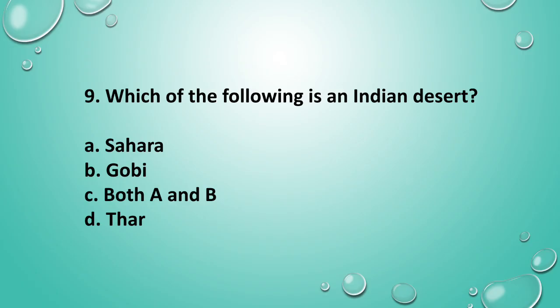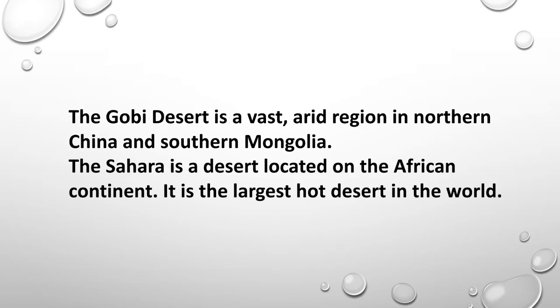Question 9: Which of the following is an Indian desert? The answer is option D — Thar. Options A and B, that is Sahara and Gobi Desert, are not Indian deserts. The Gobi Desert is a vast arid region in northern China and southern Mongolia. The Sahara Desert is located on the African continent and is the largest hot desert in the world.